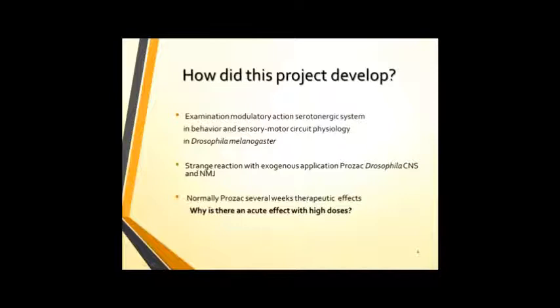So how did this project develop? One of Dr. Cooper's grad students, Zanamajid, was looking at the serotonergic system and using neuromodulators on that system to try and change the behavior and sensory output of drosophila. He found that there was an odd reaction with an exogenous application of Prozac to the drosophila central nervous system, specifically the NMJs or neuromuscular junction sites. This is weird because normally when ingested, Prozac takes several weeks, two to three-ish, for humans to see the therapeutic effects. So why would there be a very quick effect with this high dose when it's applied directly to the neuromuscular junction?